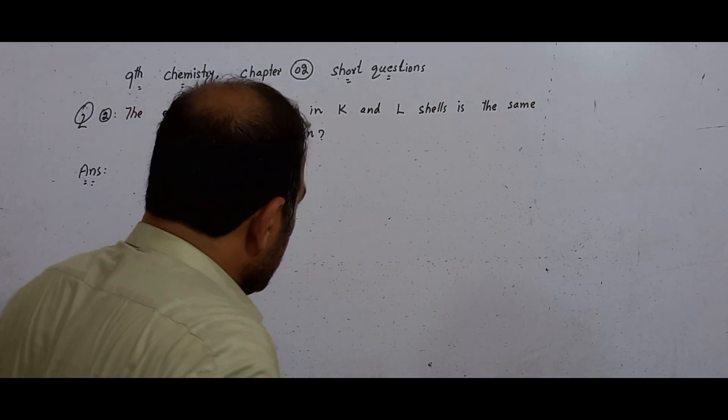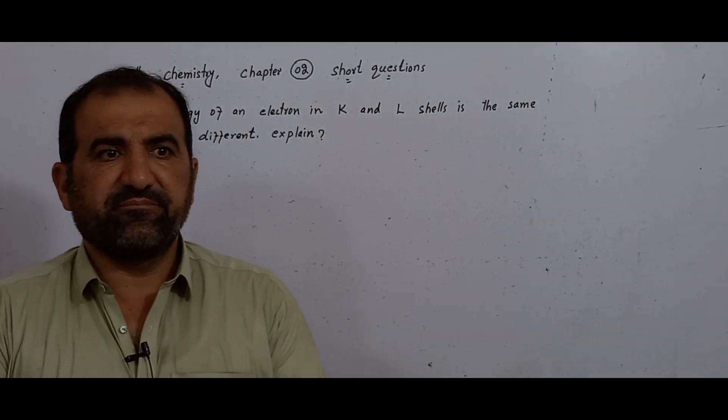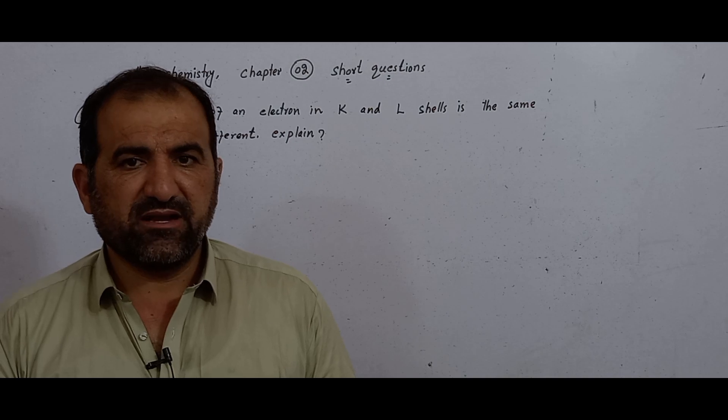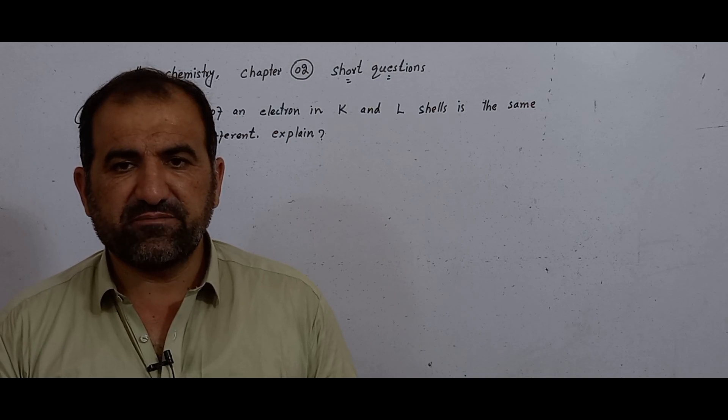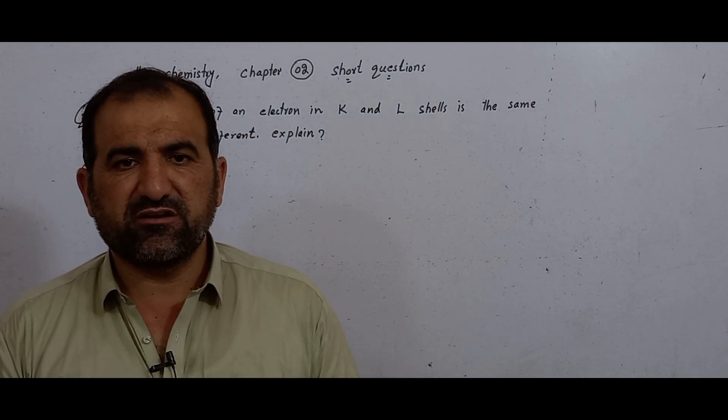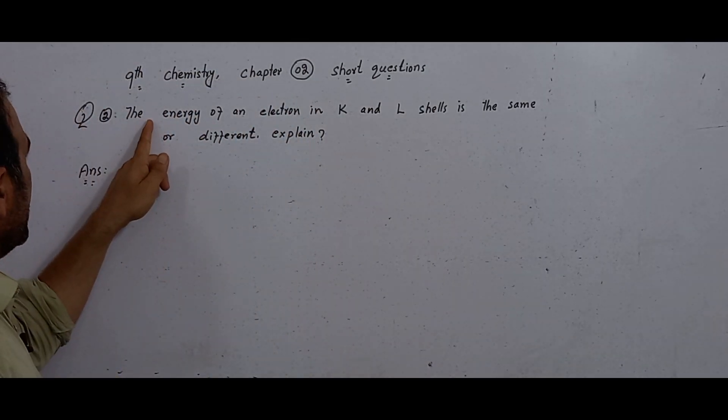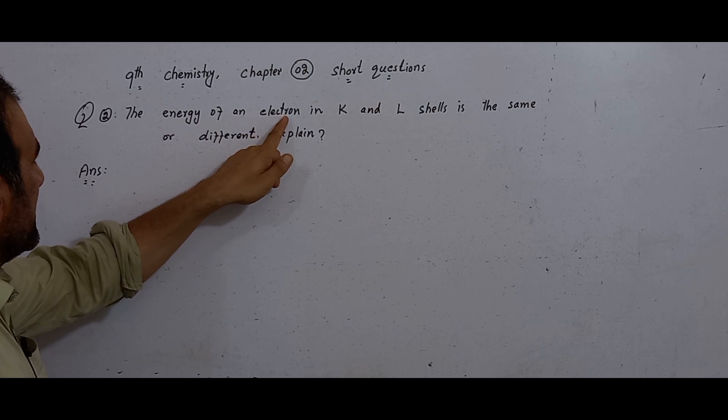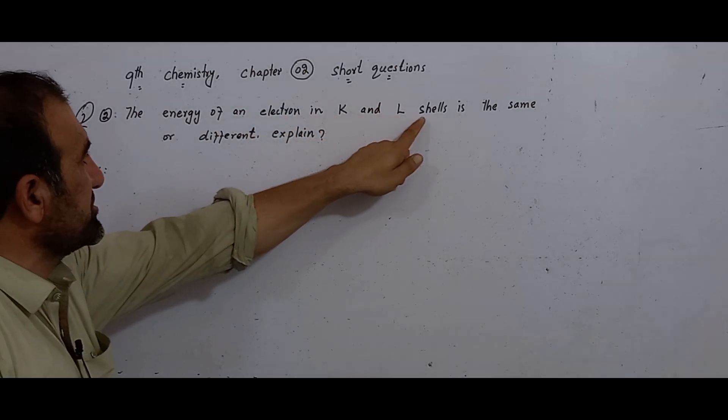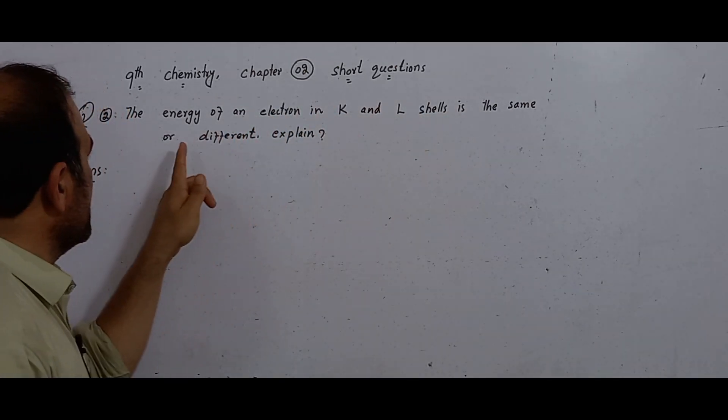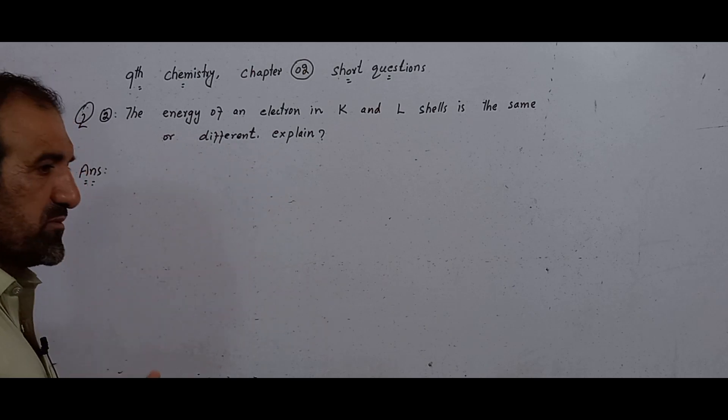Bismillah rahman rahim. Chapter number 2, short question number 2. The question is: the energy of an electron in K and L shells is same or different? Explain.